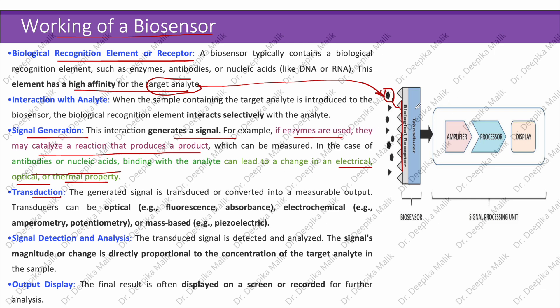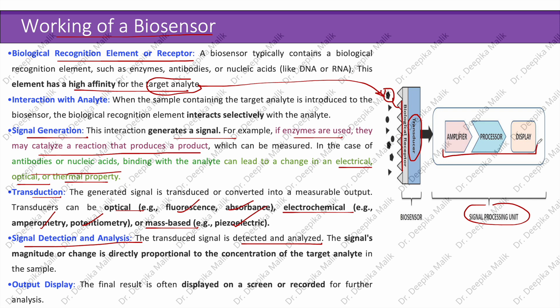The generated signal is transduced or converted into a measurable output. Transducers can be optical (e.g., fluorescence, absorbance), electrochemical (e.g., amperometry, potentiometry), or mass-based (e.g., piezoelectric). The transduced signal is then detected and analyzed — its magnitude is directly proportional to the concentration of the target analyte in the sample. The final result is often displayed on screen or recorded for further analysis.